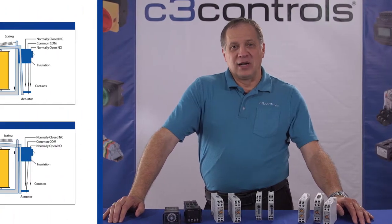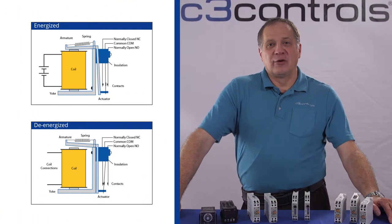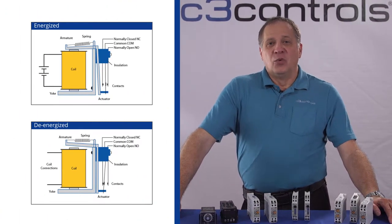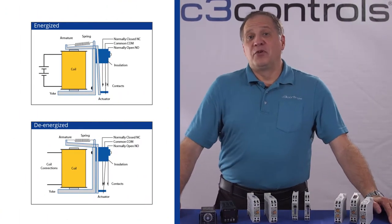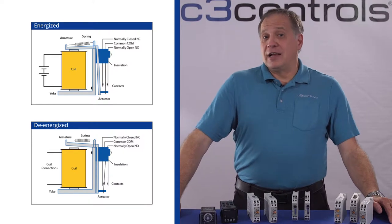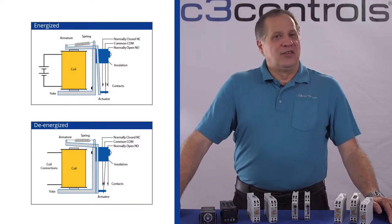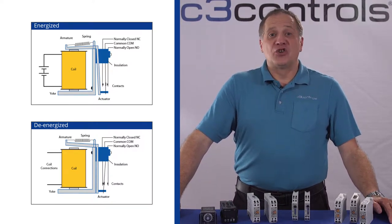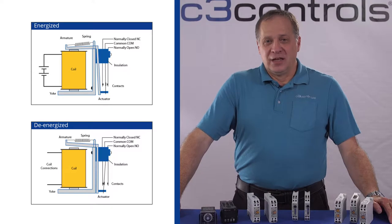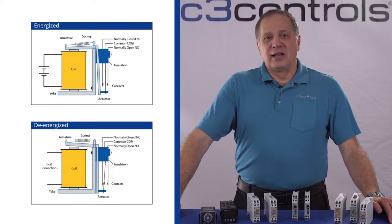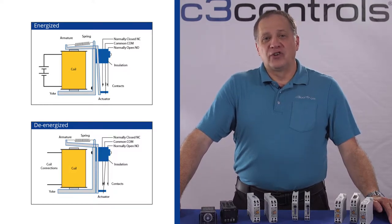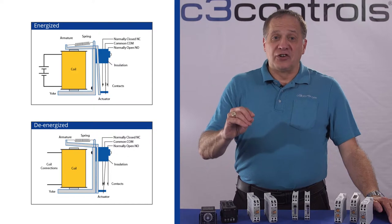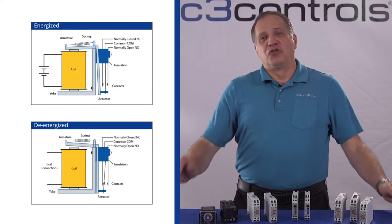An electronic timing relay has circuitry integrated into it which controls the armature motion when input voltage is applied. This addition gives the relay the property of time delayed actuation. Electronic timing relays are constructed to delay armature motion when the coil is energized, de-energized, or both.